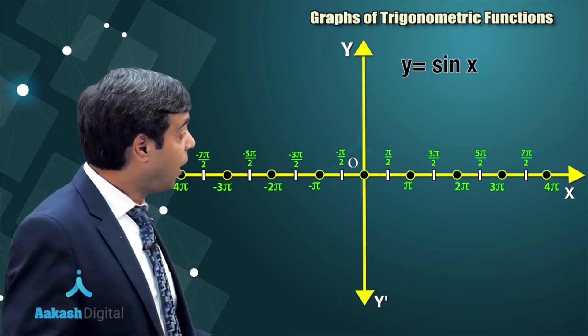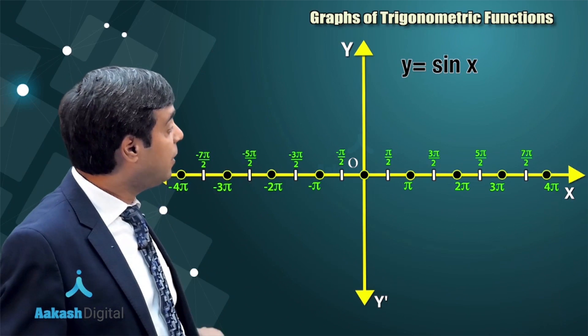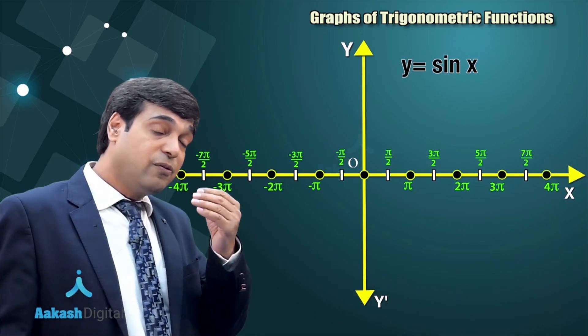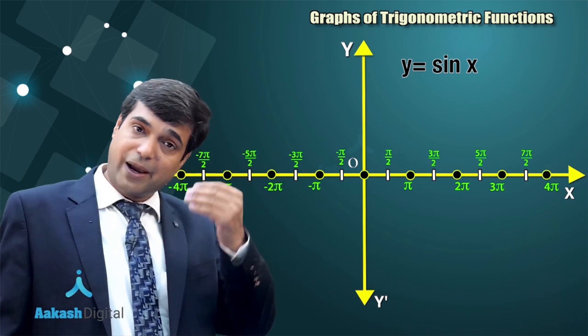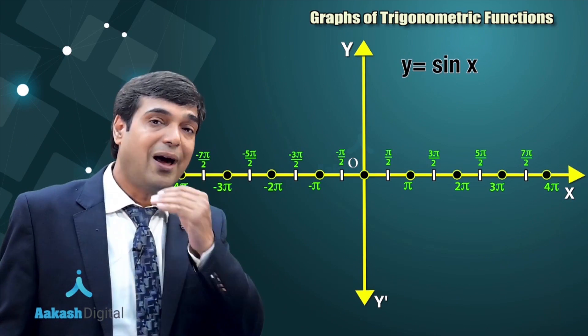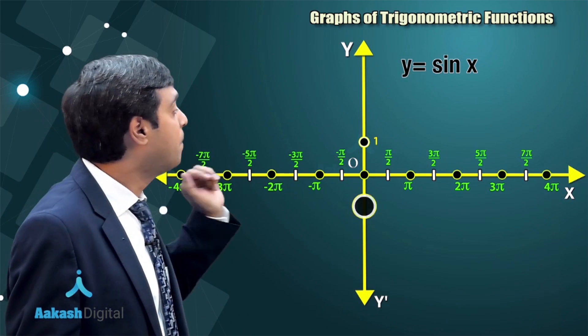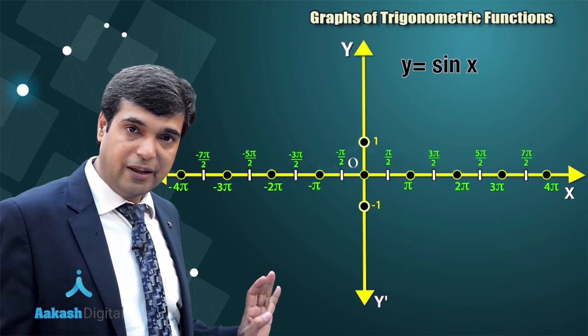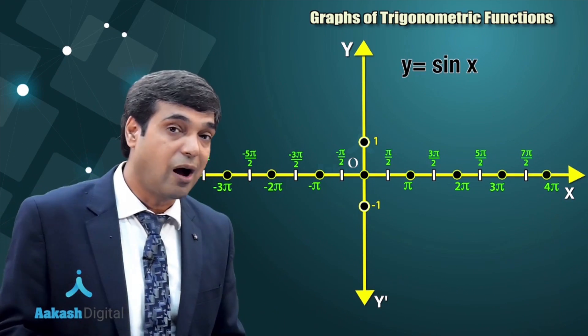Now moving on to the y-axis part. We know the value for sine x is lying between -1 and 1, so mark 1 and -1. This is clear. Okay, now start drawing the graph for sine x.